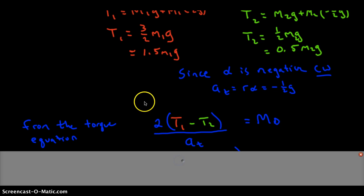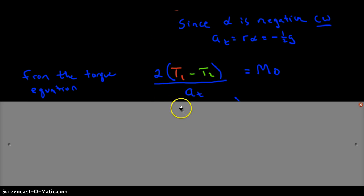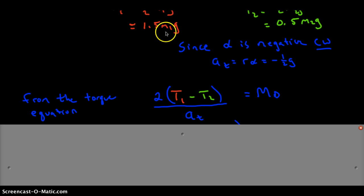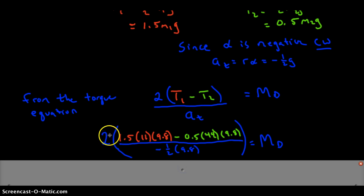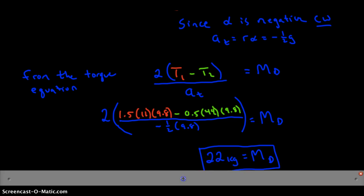All right, so coming back to our torque equation, and solving for the mass of the disc, substituting the values that we just had for T1 and T2, right here and right here. Here's the numerical values. Here's our one-and-a-half Mg minus our half Mg. Remember, we had 11 kilogram and 44 kilogram masses. Over the minus one-half g that we have for our tangential acceleration yields a numerical value of 22 kilograms for the mass of the disc, which seems pretty reasonable.